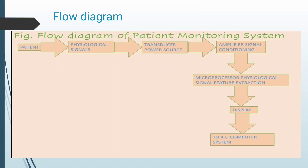Flow diagram: The system collects physiological signals from the patient. Using a transducer, it converts mechanical signals into electrical signals. It then amplifies the signal using an amplifier for signal conditioning. Using the microprocessor, physiological signal feature extraction is performed to extract the output, which is displayed on a display unit and also sent to the ICU computer system.